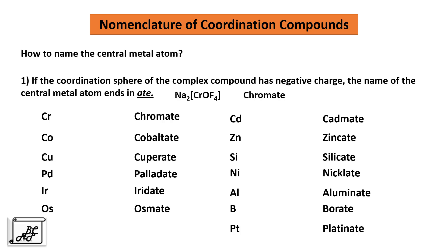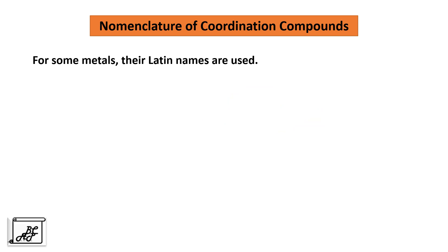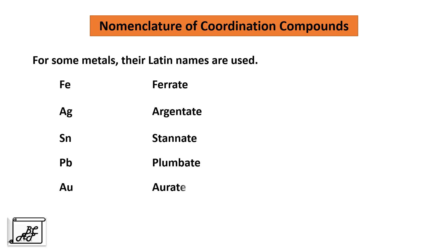As we can see here, the coordination sphere is present as a negative part. There are two sodium atoms giving a +2 charge, and the coordination sphere [CrO4F4]2- has a negative charge — therefore chromium is named as chromate. For some metal atoms, Latin names are used: ferrate (iron), argentate (silver), stannate (tin), plumbate (lead), aurate (gold), and so on.